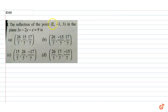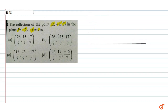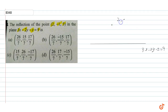Find the reflection of a point (2, -1, 3) in the plane 3x minus 2y minus z equals 9. We are given a plane whose equation is 3x minus 2y minus z equals 9, and the point (2, -1, 3).